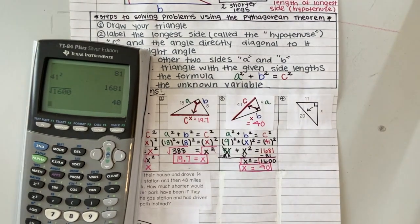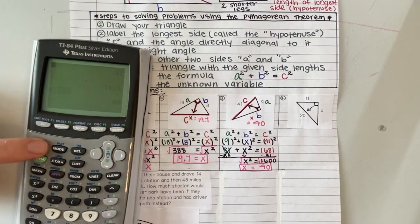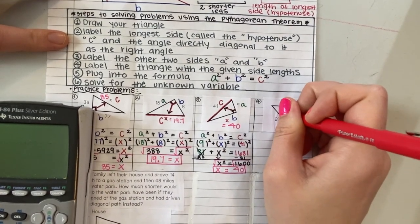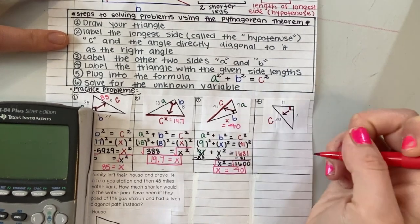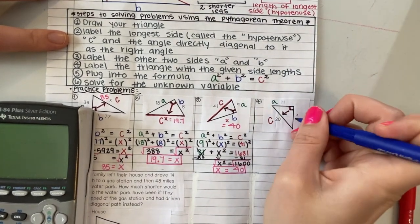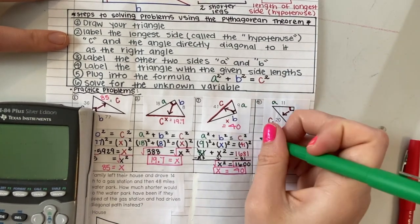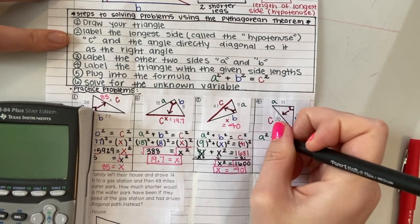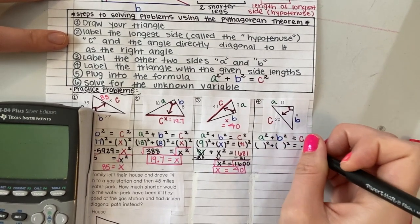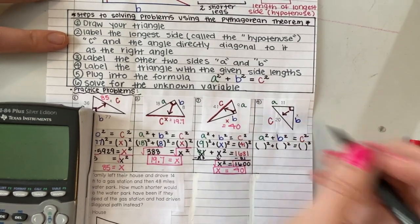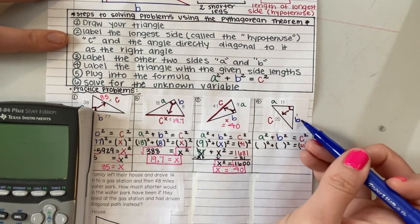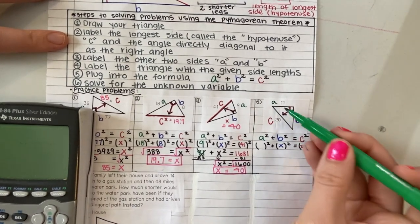My first step is to label my right angle because that will help me label my hypotenuse. My hypotenuse is my letter C. Once that one is labeled, the other two sides are A and B, and remember that it doesn't matter which one is A and which one is B. I'm going to replace the letters for the numbers I am given. In this triangle, C is 20, B is just X, and A is 11.